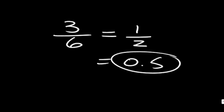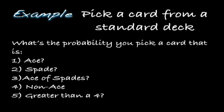Picking a card from a standard deck — assuming again that ace is low — what's the probability that you pick a card that is, first question, an ace, and second question, a spade?